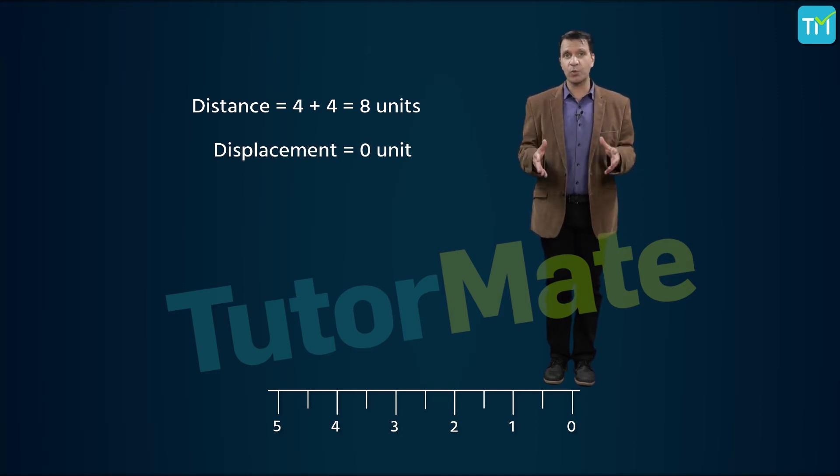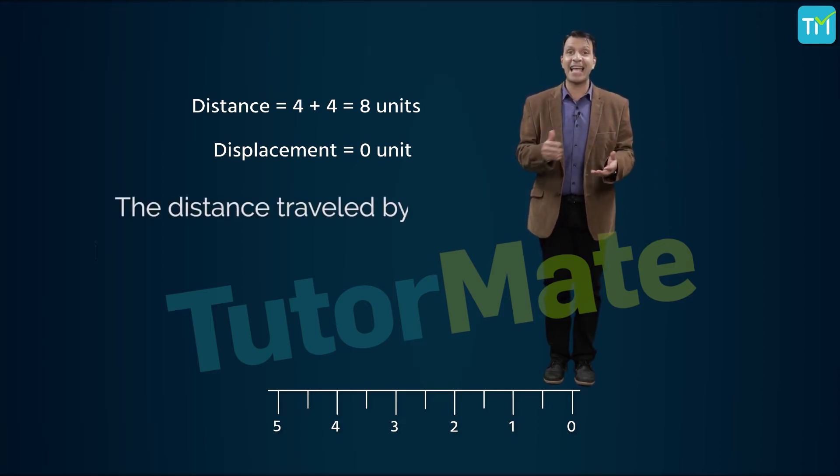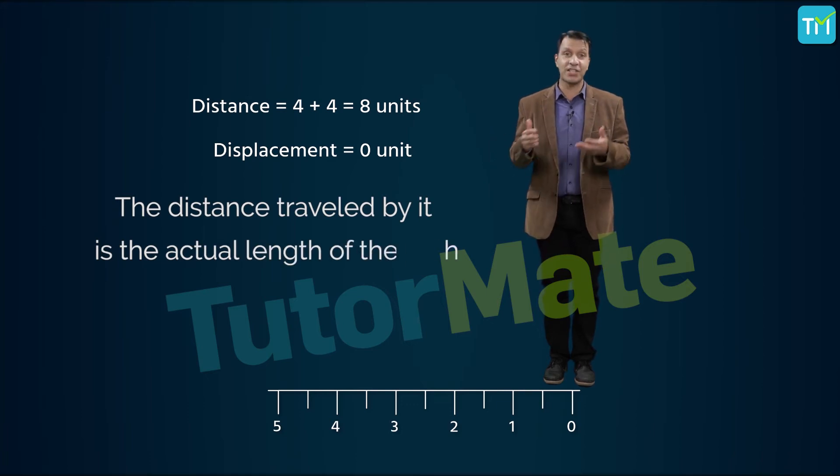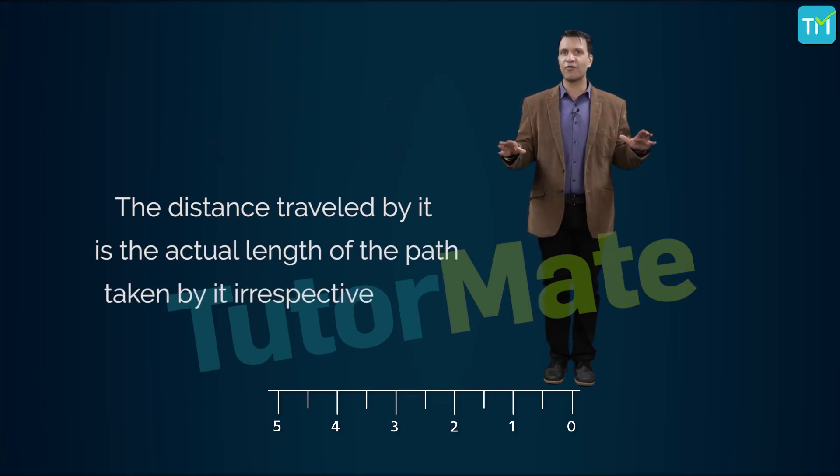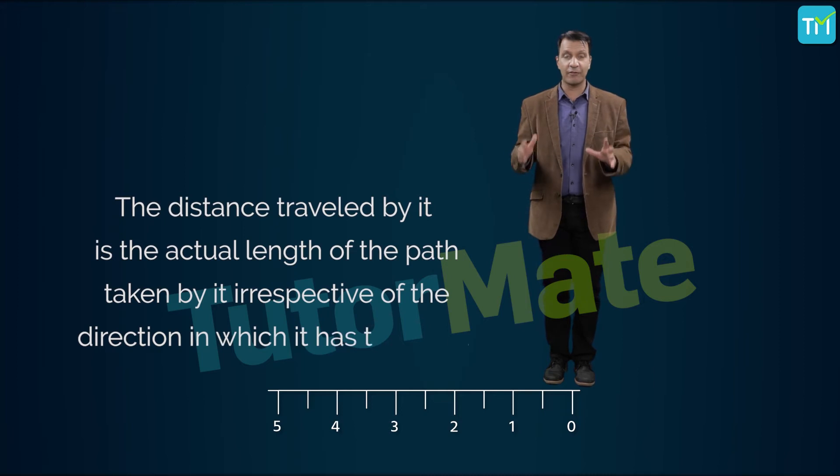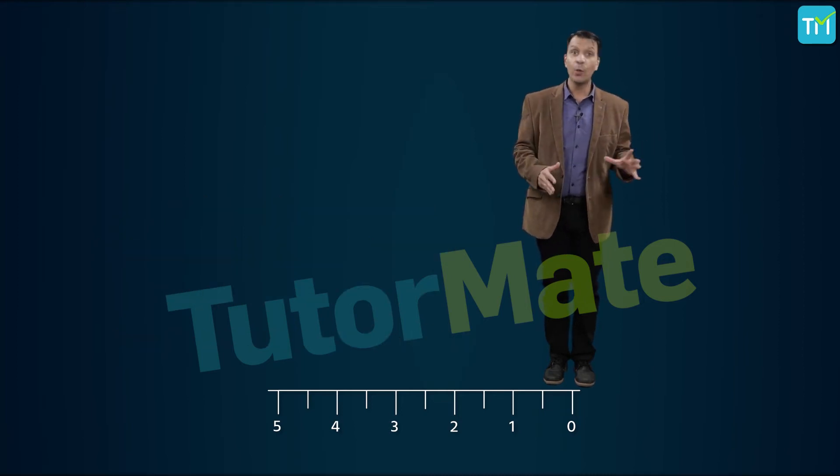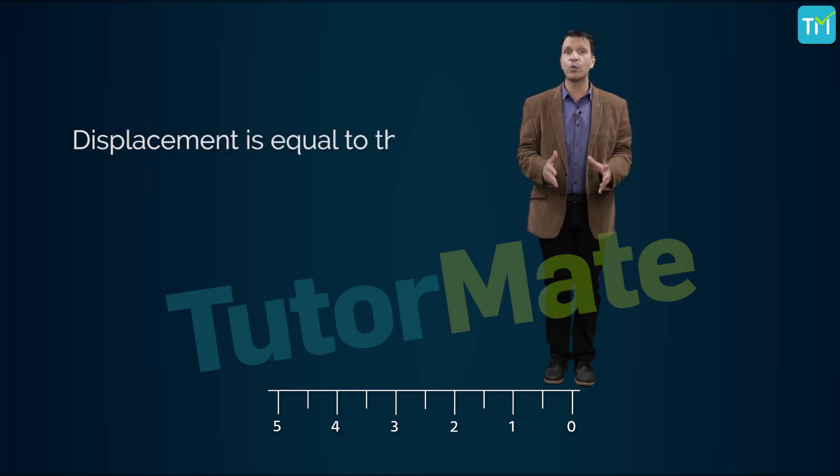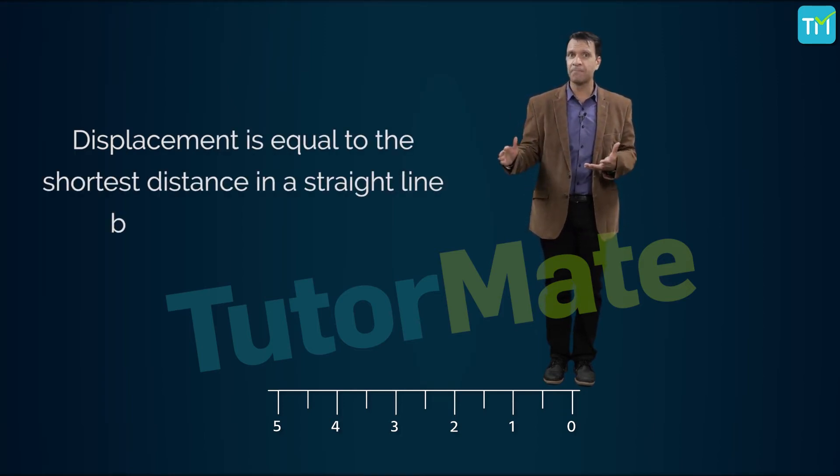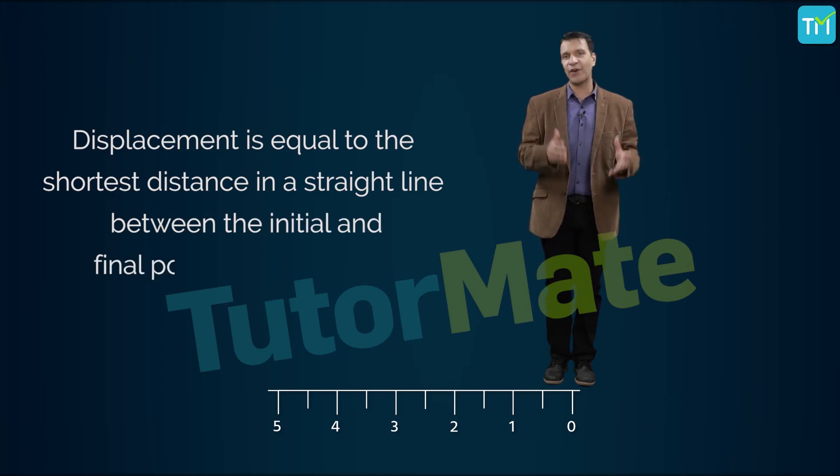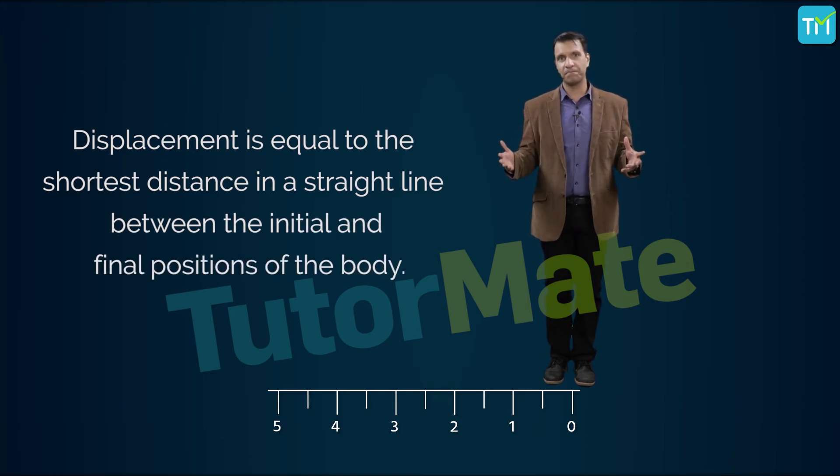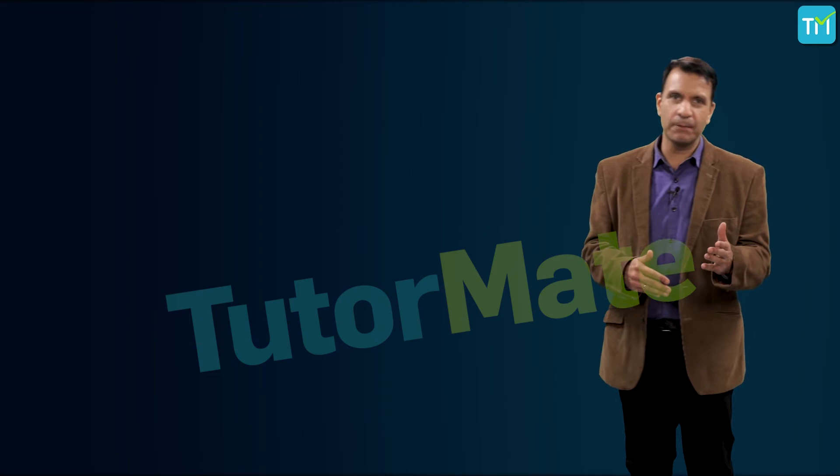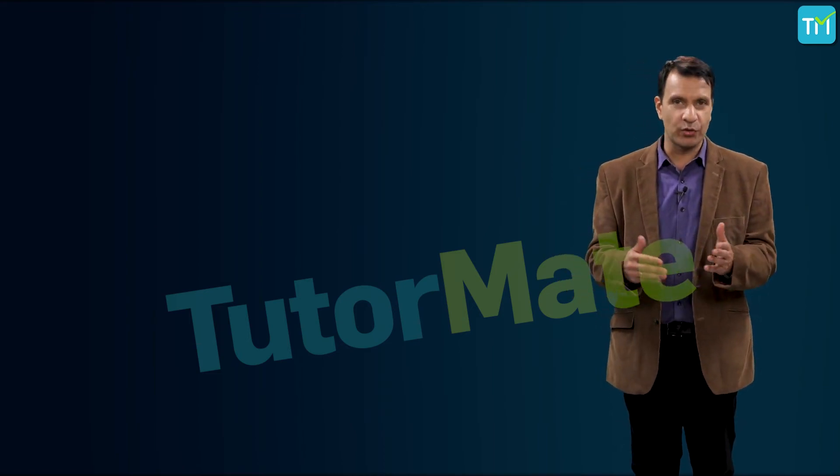This is because when we define distance, we say that when a body moves from one point to another, the distance traveled by it is the actual length of the path taken by it, irrespective of the direction in which it has traveled. But on the other hand, when we define displacement, we say that displacement is equal to the shortest distance in a straight line between the initial and final positions of the body. Well, this was just me moving left and right on the screen.